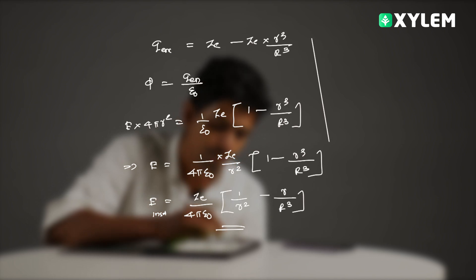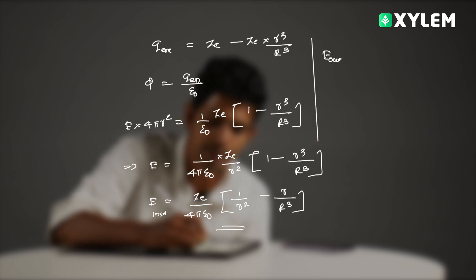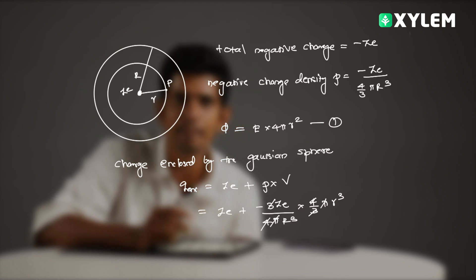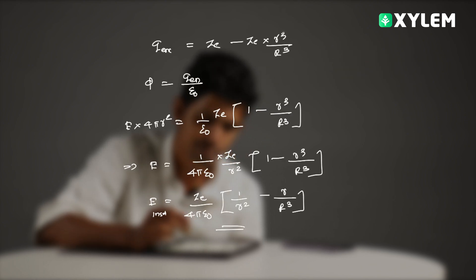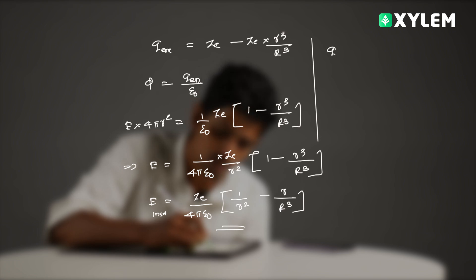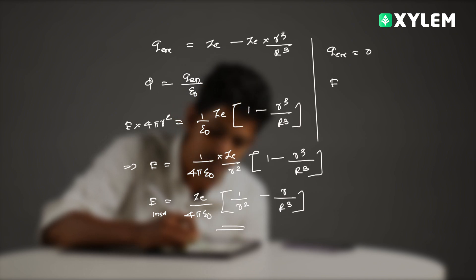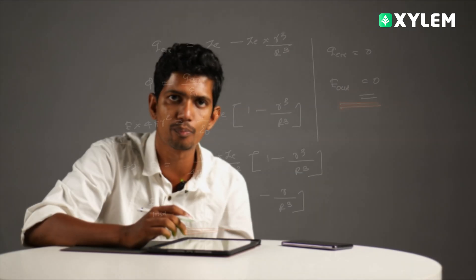If asked to find the field outside, we consider a Gaussian sphere outside the atom. The charge enclosed by that Gaussian sphere is zero, because the atom is electrically neutral. Therefore, the electric field outside is equal to zero. So inside field is given by the derived expression, and outside field is zero.